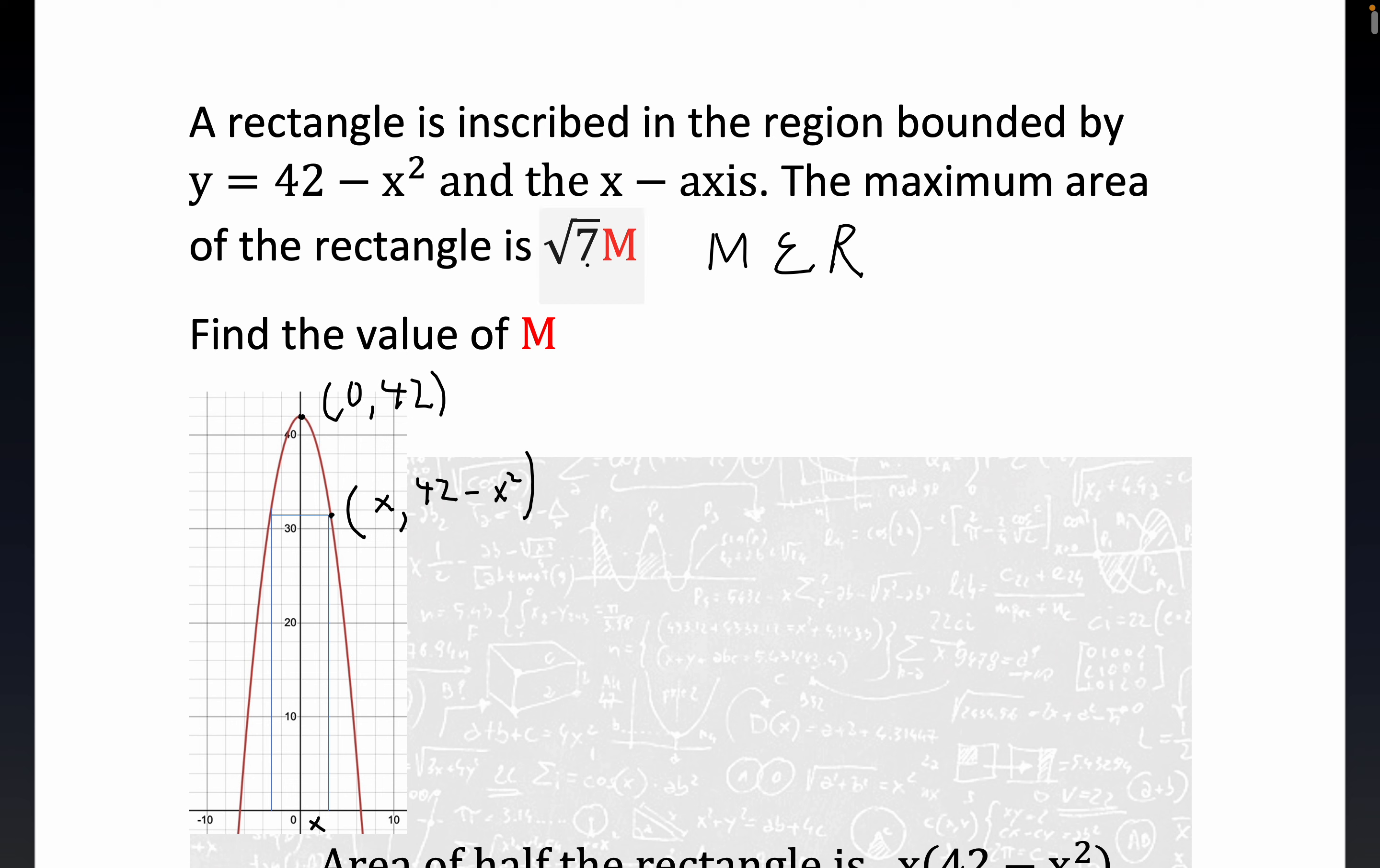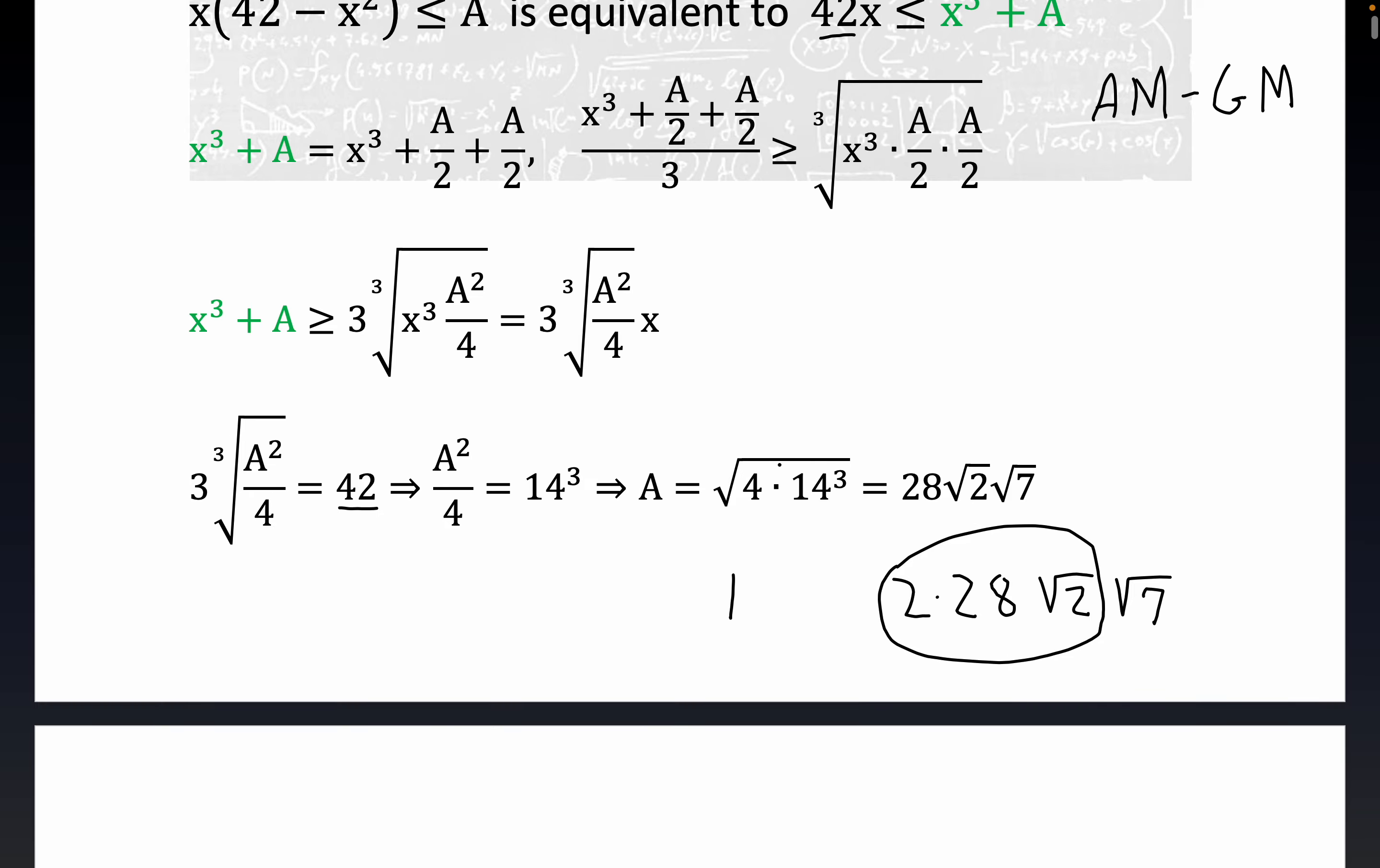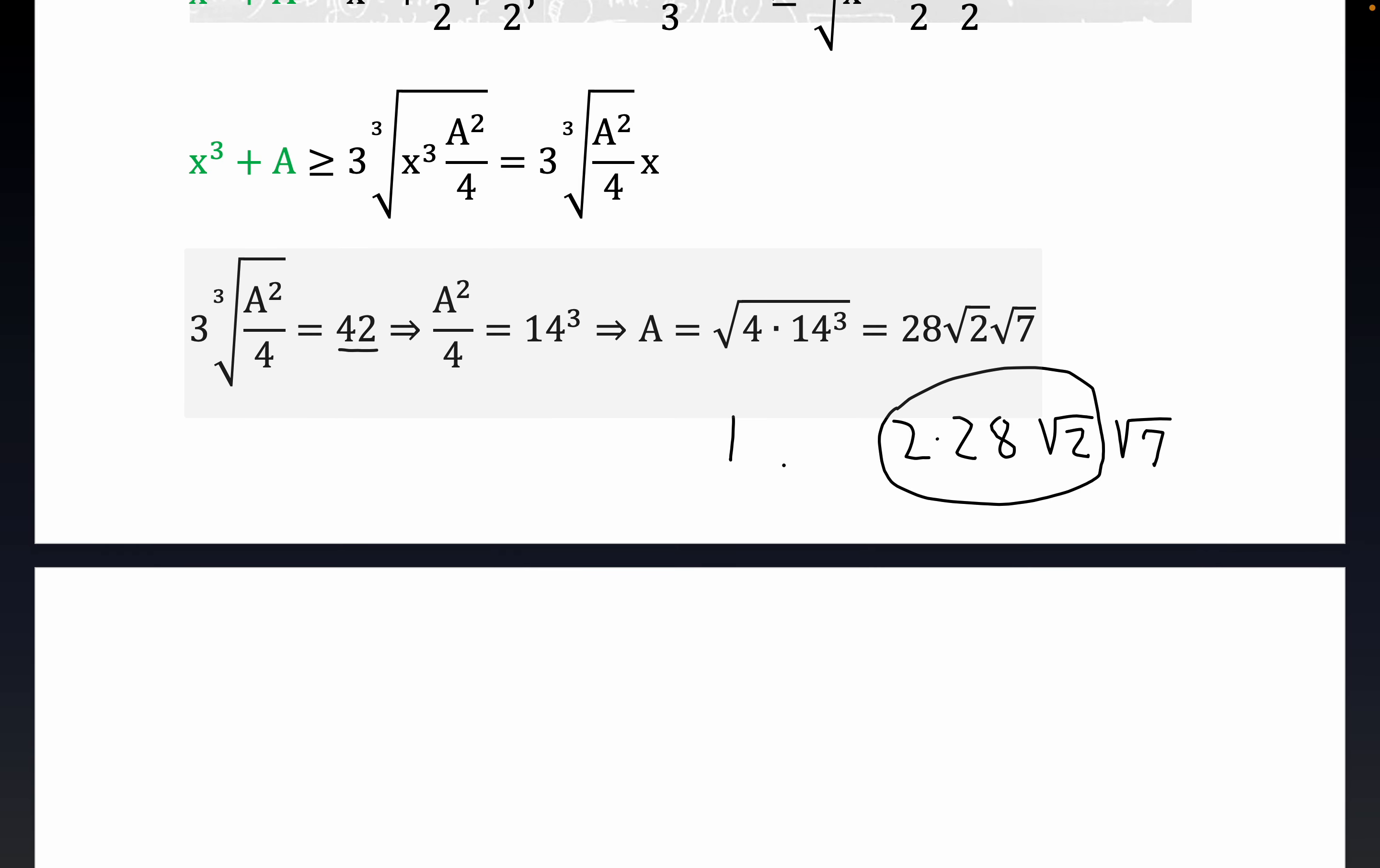Again, this is a peculiar, when I first looked at this problem, I couldn't figure it out. I just watched the solution at Cocoa Education. I wasn't able to figure it out. I didn't know that the AMGM would be useful here. But anyway, this is the m, because the m is the coefficient of root 7. So the answer to the question would be m is equal to 56 root 2.